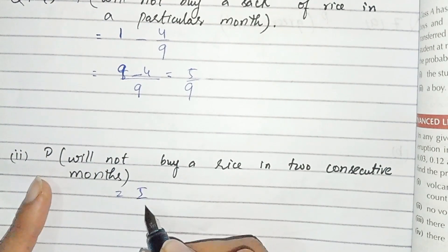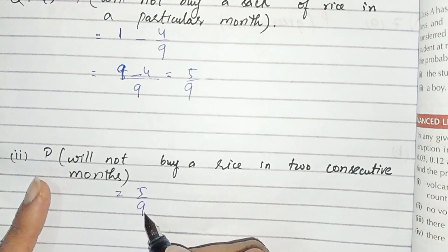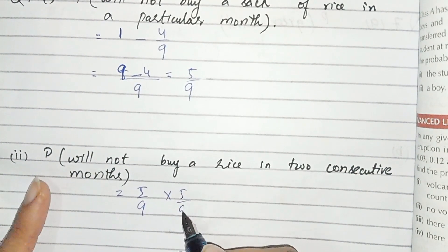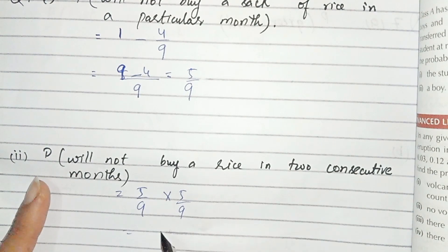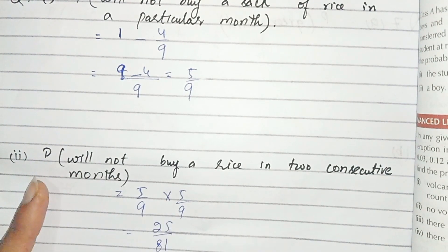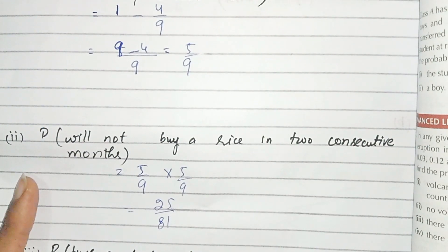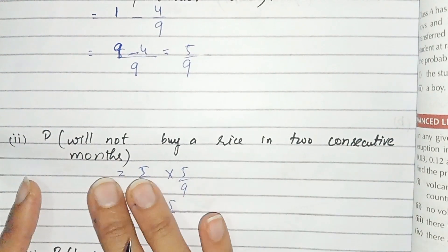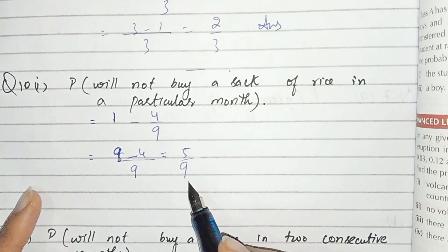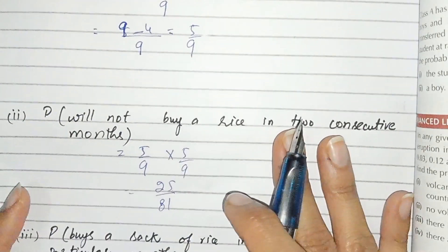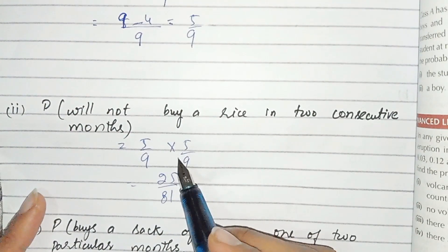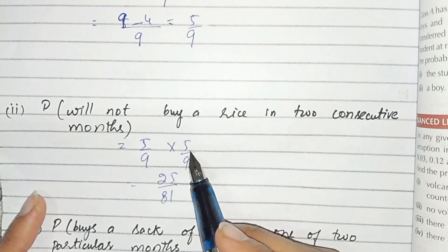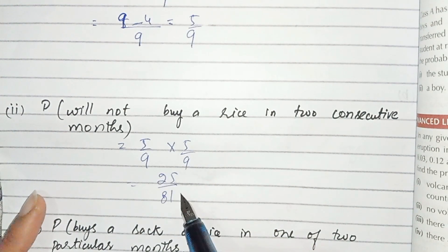5 over 9 multiplied by 5 over 9 gives 25 over 81. This is the probability of not buying a sack of rice in 2 consecutive months.